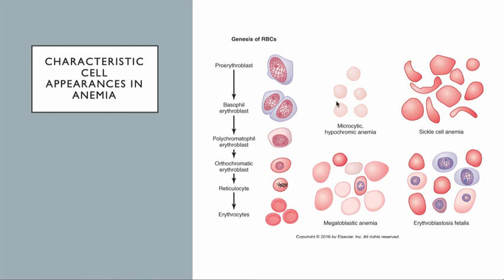When anemias occur — and we're going to talk about anemias shortly — there are different shapes and different colors of cells that occur. In microcytic hypochromic anemia, they're small — that's microcytic — and hypochromic means they're pale, not as much color, because they don't have as much hemoglobin.